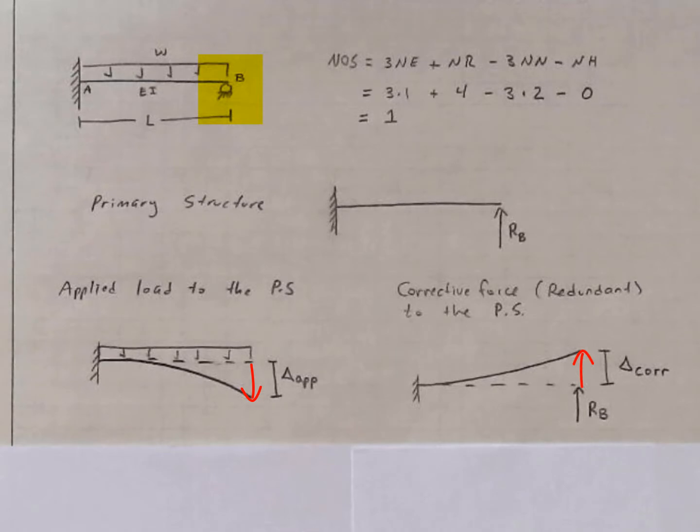The key constraint in the flexibility method is that these two values delta applied and delta corrective must be the same to enforce the same boundary condition that's applied by the roller. In other words, zero deflection at the tip.